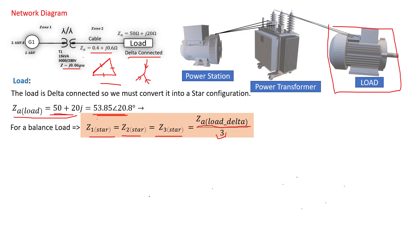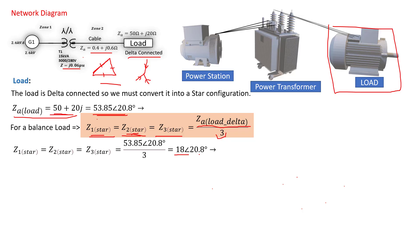For example, you could have a house on one phase and two motors on the other two phases — the load would also be unbalanced. In this case we have a balanced load. The formula for unbalanced is very different and we will look at that in a future tutorial. Applying the formula and replacing the values, we have 53.85 at an angle of 20.8 degrees divided by three, giving us 18 ohm at an angle of 20.8 degrees as the Z actual for each star-connected phase.